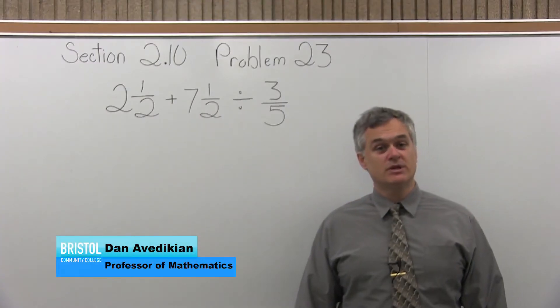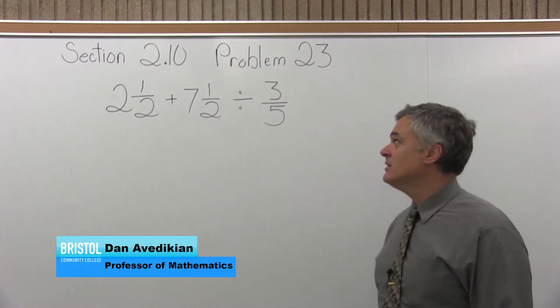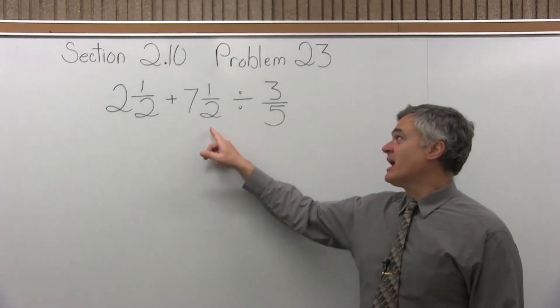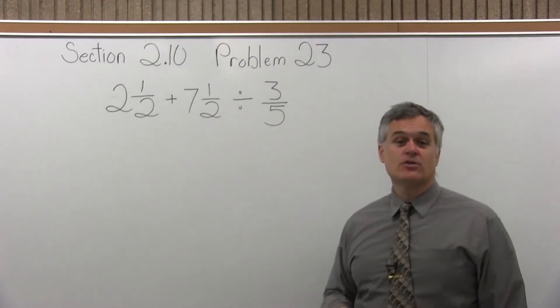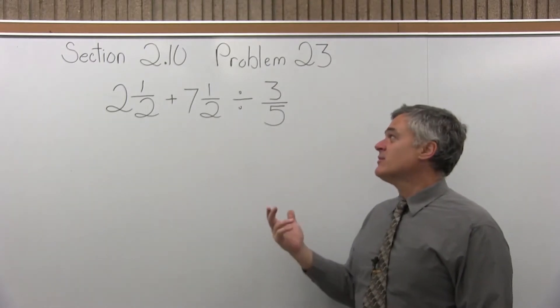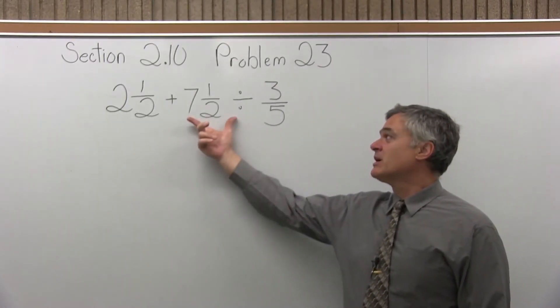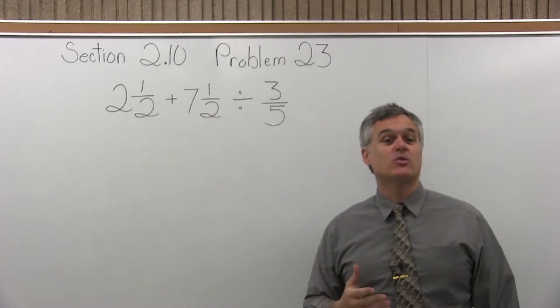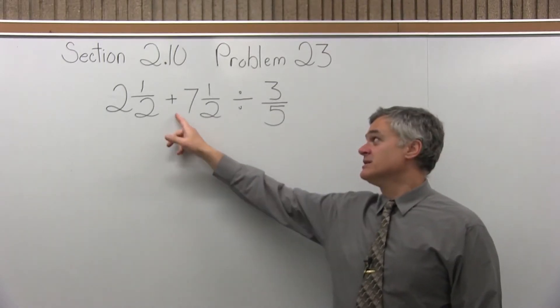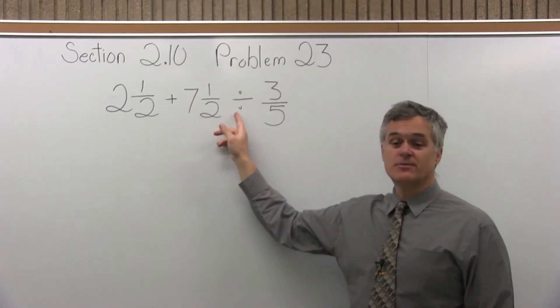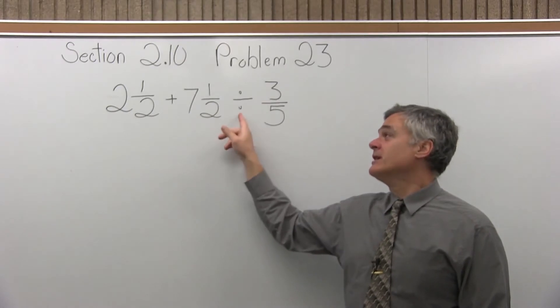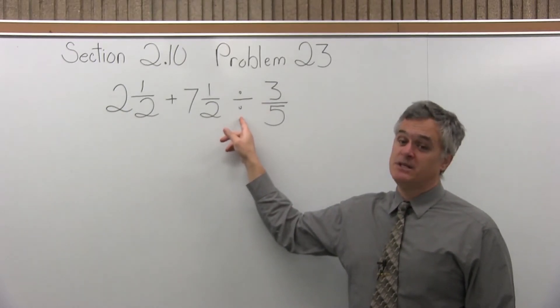This is Section 2.10, Problem 23. We have two and a half plus seven and a half divided by three fifths. The point of this problem is that you have two mathematical operations. You have to decide which one will occur first. There is an addition and a division. The division must be done first.